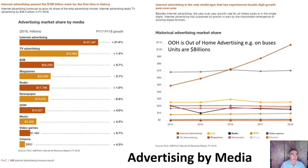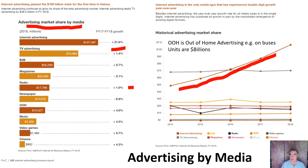Looking in more detail at advertising share by media: internet advertising is going up, radio is actually going up, while newspaper and magazines are declining. Music, video games, and cinema are all going up. If we plot it against time, everything is pretty flat from 2014 to 2018 except for internet, which is growing.